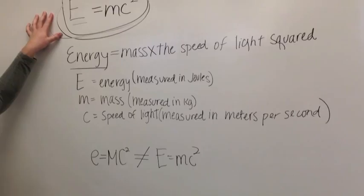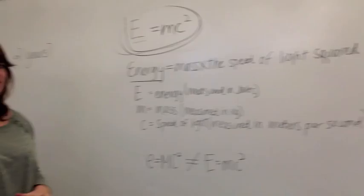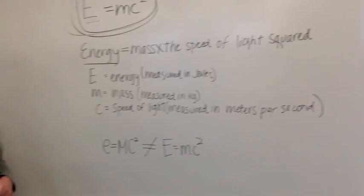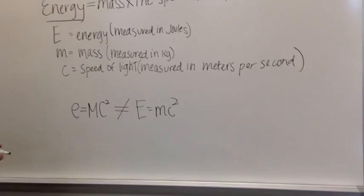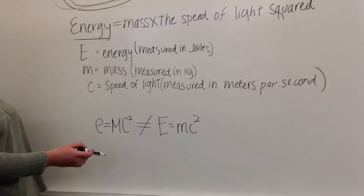So capital E equals energy, which is measured in joules, and lowercase m equals mass, which is measured in kilograms. And then lowercase c is speed of light measured in meters per second, which is the explanation of E equals mc squared. And it's very important to realize that lowercase e equals uppercase n, uppercase c squared is different from the actual equation.